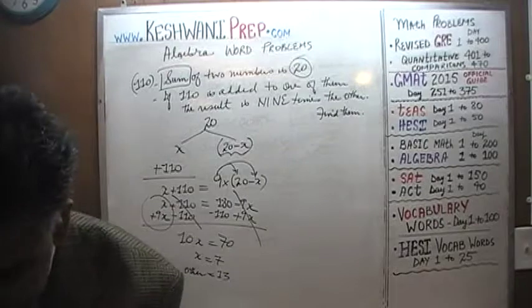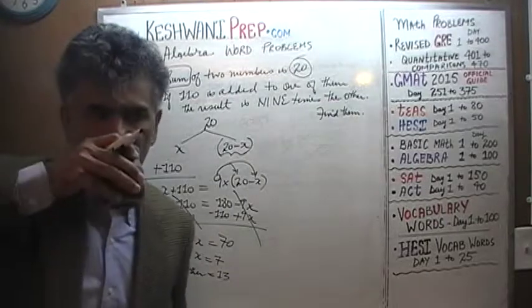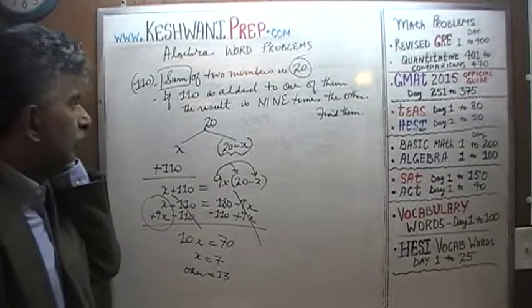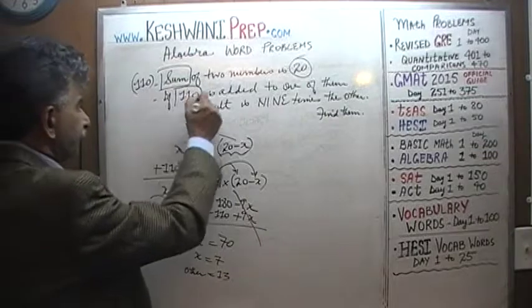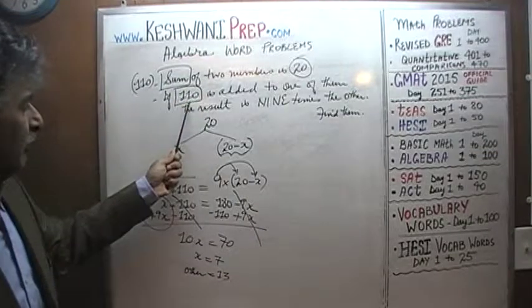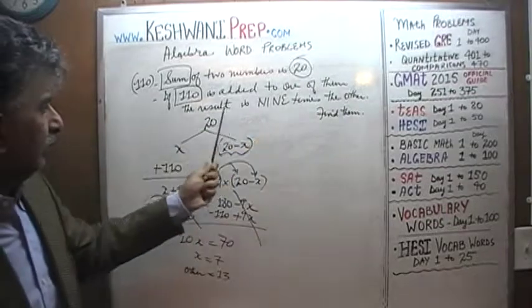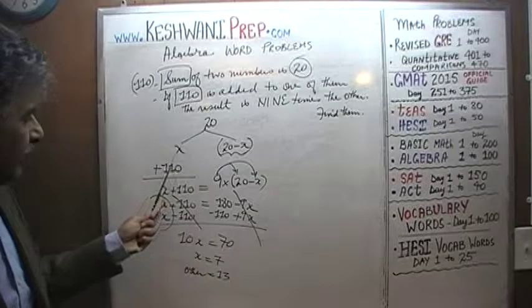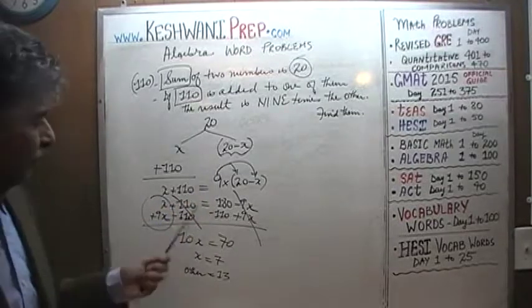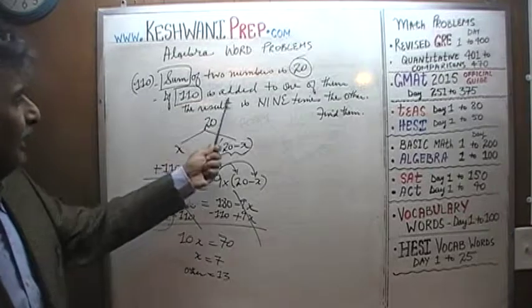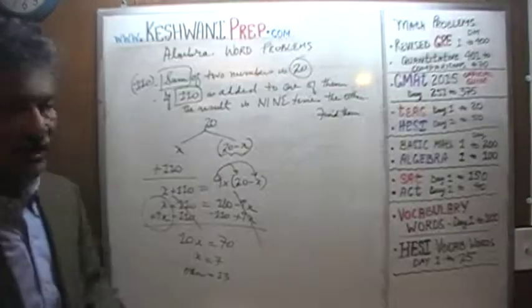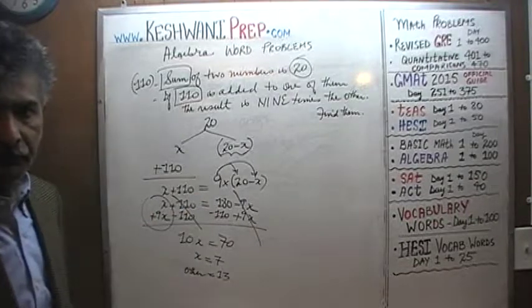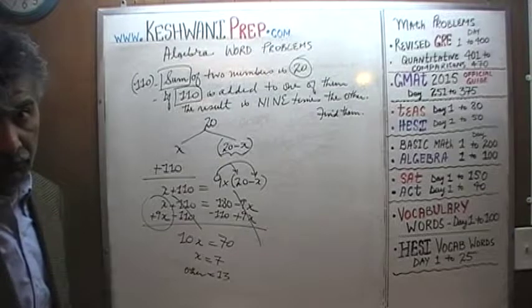The question that comes to mind: how did we know to add 110 to X and not to the other number? It says 110 is added to one of them and the result is 9 times the other. Why not add 110 to the other number instead? Let's find out.